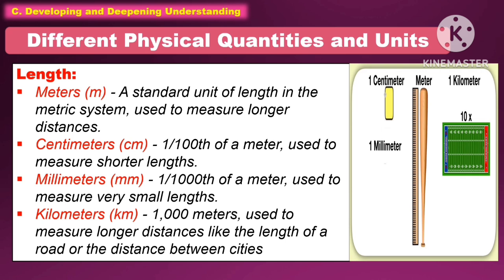The following are the different physical quantities and units. For length, we use meters, centimeters, millimeters, and kilometers. Meters is the standard unit of length in the metric system. Centimeters is 1 out of 100 of a meter, used to measure shorter lengths. Millimeters is 1 out of 1,000 of a meter, used to measure very small lengths. Kilometers is 1,000 meters, used to measure longer distances like the length of a road or distance between cities.